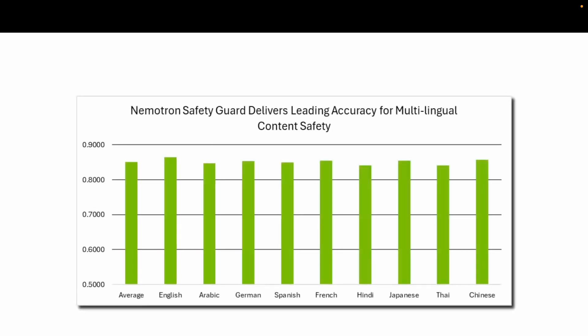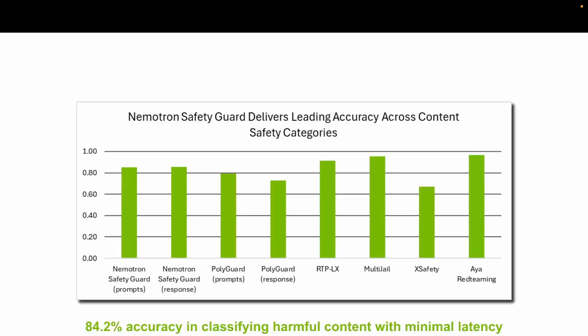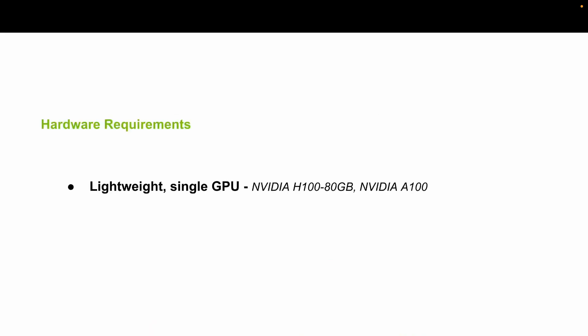So how does the model perform? Since the model is multilingual and culturally adaptive, it's built for global enterprises. This chart shows the model's capability in moderating content across nine different languages. Moreover, it maintains strong performance on unseen languages during fine-tuning, which demonstrates strong zero-shot generalization, advancing culturally aware safety. In benchmark testing, the model delivers best-in-class performance across 23 different safety categories, achieving 84.2% accuracy in classifying harmful content with minimal latency. The model is lightweight enough to run on a single GPU, or you can deploy it as NVIDIA NIM for scalable, production-grade integration.